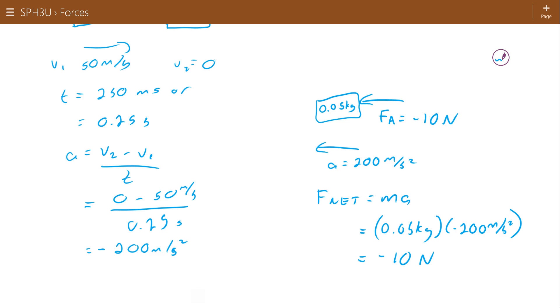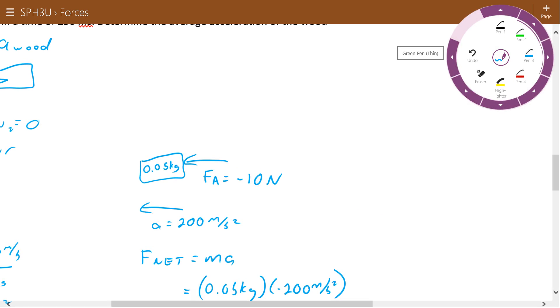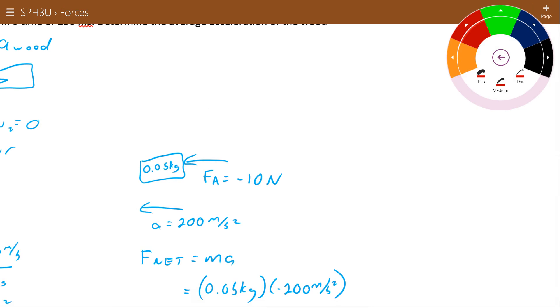So if the wood pushes on the bullet to stop it with 10 newtons of force, what that means then is that the bullet is going to push back on the wood with the same force.